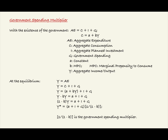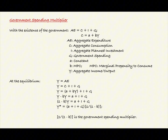Let's define all of our variables. AE equals aggregate expenditure. C equals aggregate consumption. I equals aggregate planned investment. G equals government spending. A is a constant. B is the MPC, or marginal propensity to consume. And Y is the aggregate income or output.